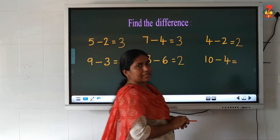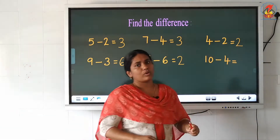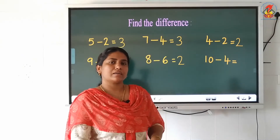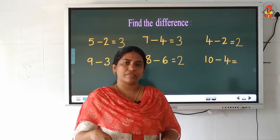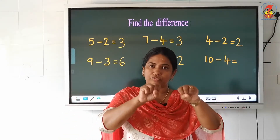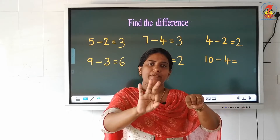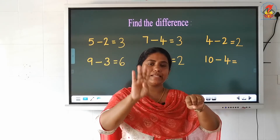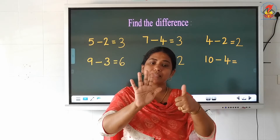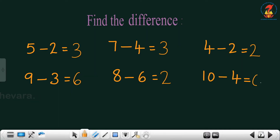Now look at the last question: 10 minus 4. Which is the small number? 4. So we will start counting after the small number to the bigger number. After 4: 5, 6, 7, 8, 9, 10. How many fingers did I raise? 6 fingers. So 6 is our answer.